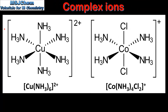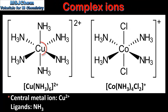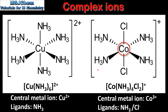Next we look at two more examples of complex ions. In the example on the left the central metal ion is the copper 2+ ion, the ligands are ammonia molecules, and the charge on the complex ion is 2+. In the example on the right the central metal ion is the cobalt 3+ ion. The ligands are ammonia molecules and chloride ions, and the charge on the complex ion is 1+.